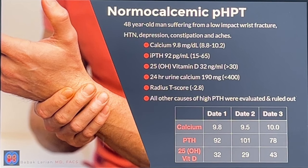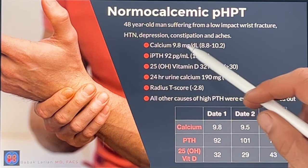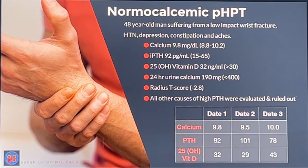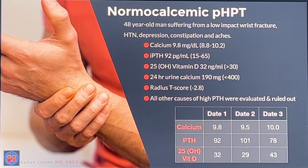Here's an example: a 40-year-old man suffering from low-impact wrist fractures — he placed his hand on a table firmly and developed fractures. He's had depression, high blood pressure, constipation, and body aches, none of which were diagnosed. Calcium levels were always normal, but because of the low-impact fracture, a bone density study was done — showing osteoporosis, which is uncommon in a 48-year-old man. When PTH was checked, it was elevated: normal calcium, elevated PTH.